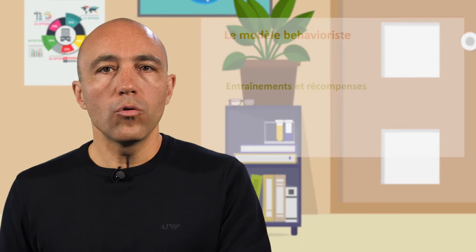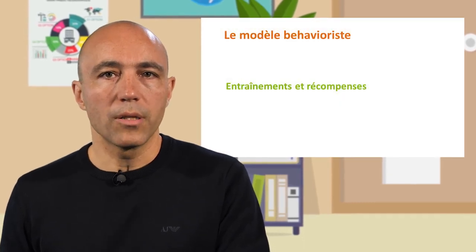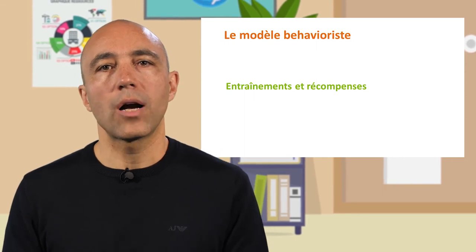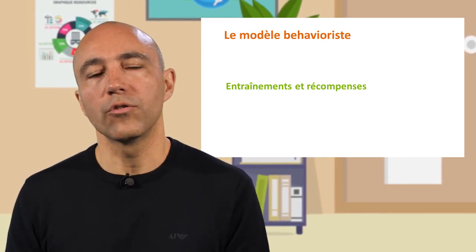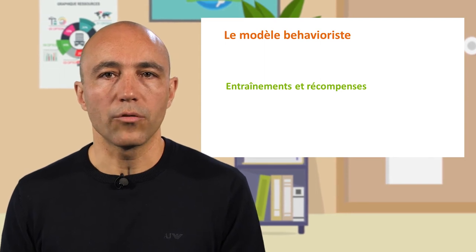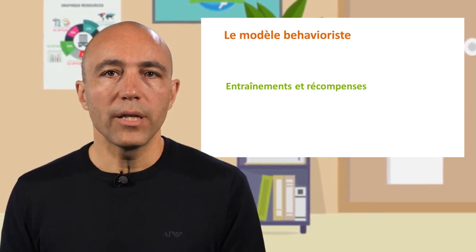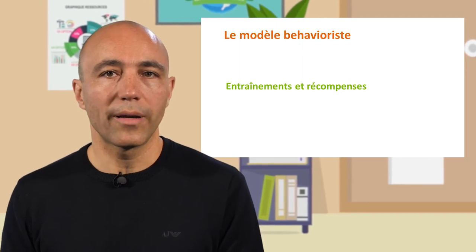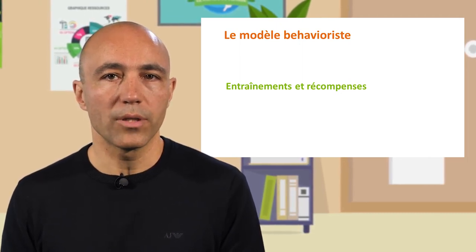Le second modèle prolonge le modèle empiriste. Selon la représentation dite « behavioriste » de l'apprentissage, on acquiert ces savoirs par des processus d'entraînement et de conditionnement, renforcés par des récompenses et des punitions. Les pédagogies qui en découlent sont celles de la carotte et du bâton. Elles ont montré leurs très fortes limites dans la plupart des apprentissages.